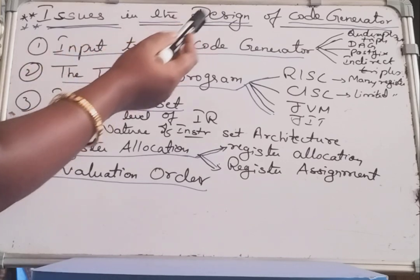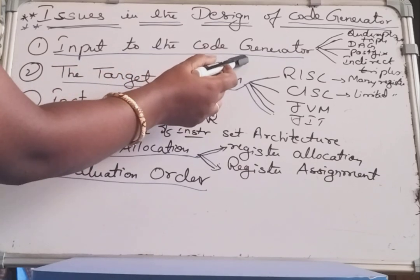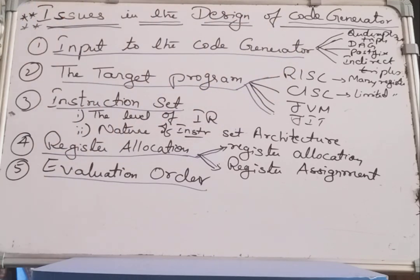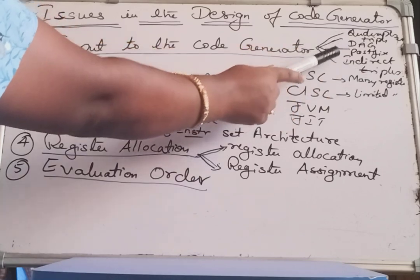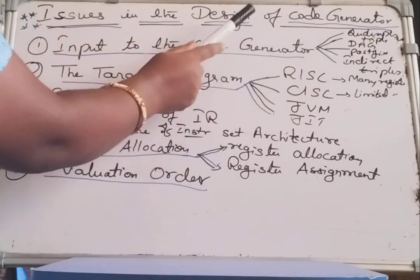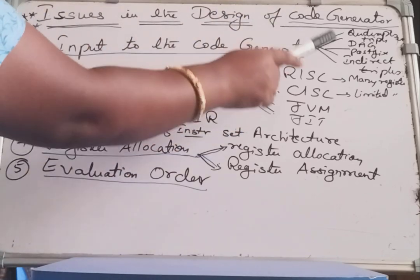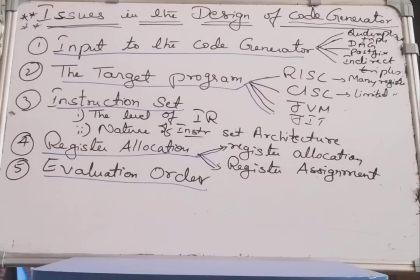The first issue is the input to the code generator. Based on the front end parameters received, what kind of input will be given to the code generator? The input can be in the form of quadruples, triples, a directed acyclic graph (DAG), post-fix notation, or indirect triples. The front end input can be any of these forms, and the code generator must handle these different kinds of inputs in order to generate the code.